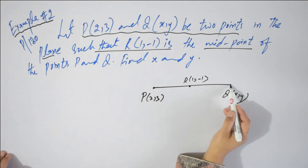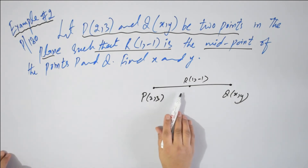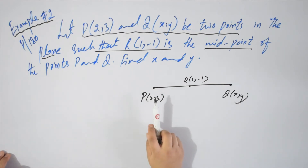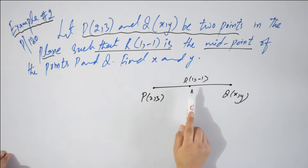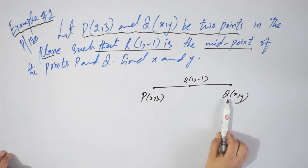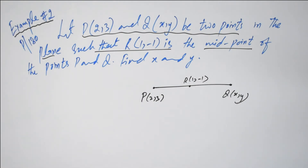I hope students that with this figure you can understand the statement — there are 2 points and there is 1 midpoint, and your target is to find the unknown end point. So it is very simple; obviously they have given you the midpoint, so you will solve this example by using the midpoint formula.